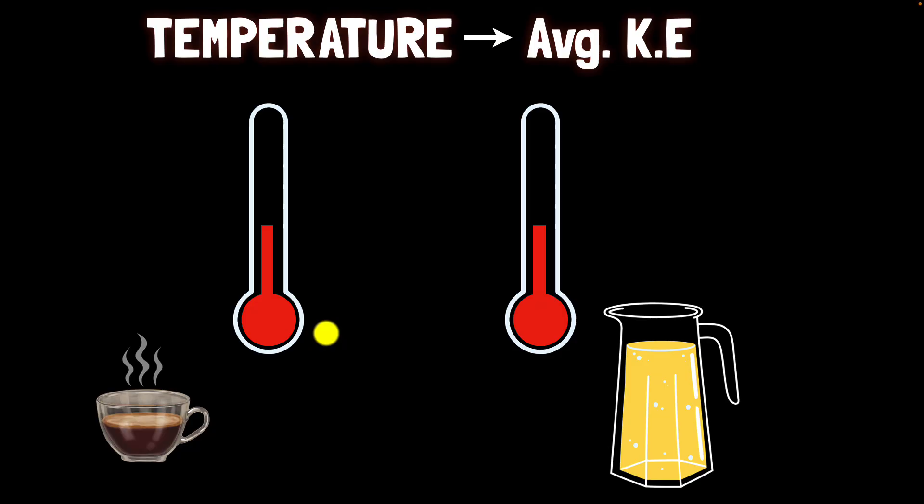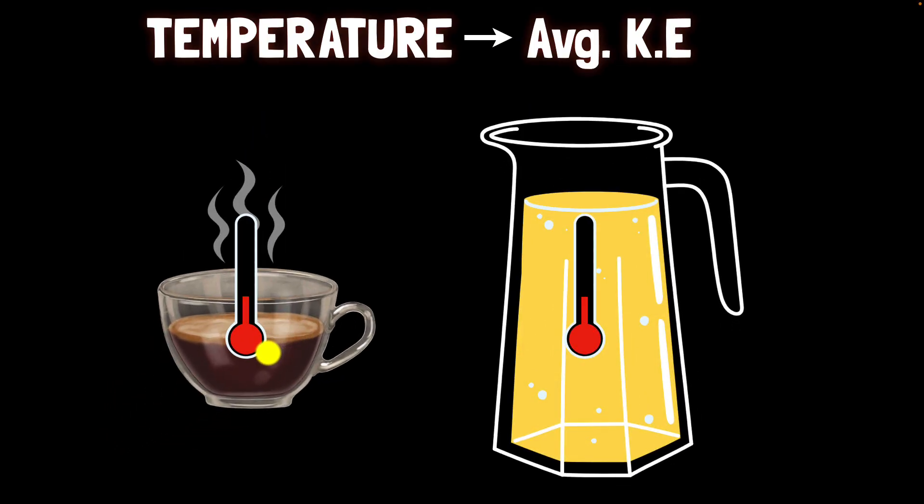So the same thing happens when we insert these thermometers because the coffee is much hotter than the thermometer energy starts flowing into the thermometer and its temperature starts increasing. But over here the lemonade is at a much lower temperature compared to the thermometer it's just taken out of the refrigerator it's much colder and so the energy flows out of the thermometer making the thermometer colder reducing its temperature.